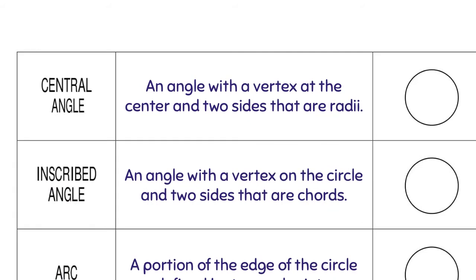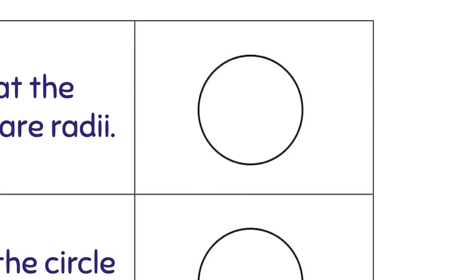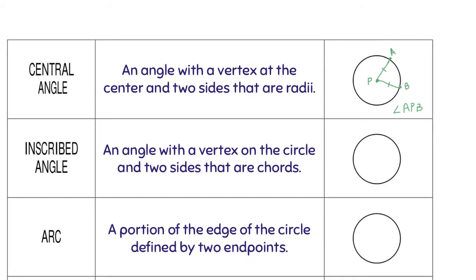Now let's look at angles. A central angle is an angle with the vertex at the center and two sides that are radii. So here's my circle. Let's say the center is point P. So a central angle would be any angle that uses P as a vertex. So then I'm going to name these other two points, A and B. A and B are both going to be radii. So both are radius. Angle A, P, B. Make sure that P is in the middle because it's the vertex. That's a central angle.